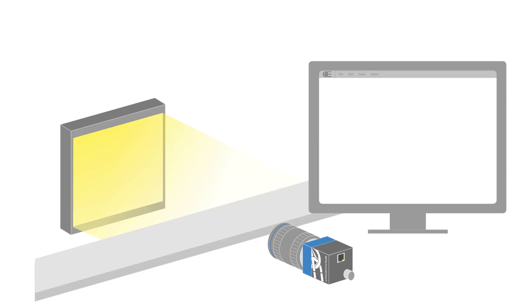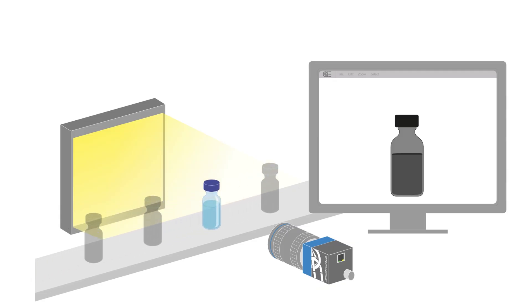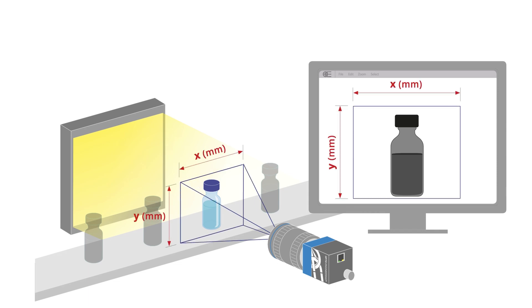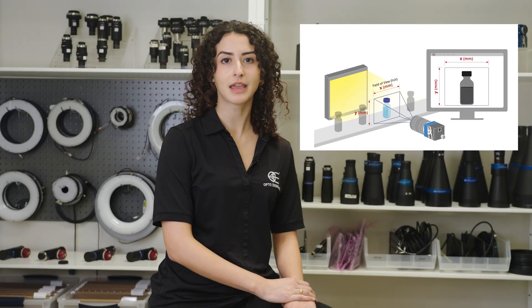The field of view, often abbreviated FOV, is the dimensional area that can be viewed by the lens and imaged onto the camera sensor. In the most basic terms, the field of view is a real-world value that gives us the dimensions of the area that we are capturing with our vision system. Typically, this is one of the first parameters that is defined in the machine vision task. The user needs to know the area that must be acquired in order to capture all of the necessary information for the application's final task.